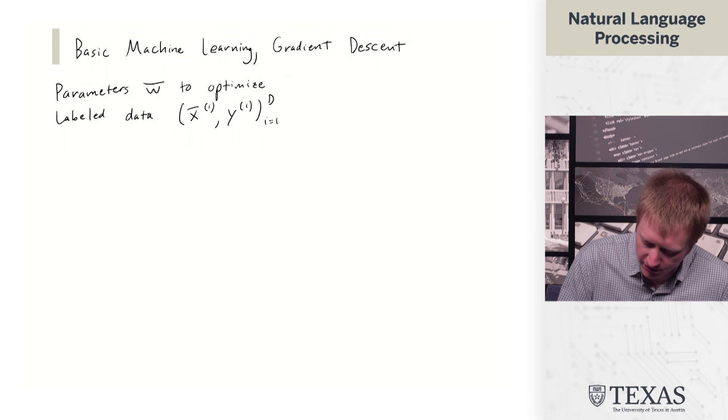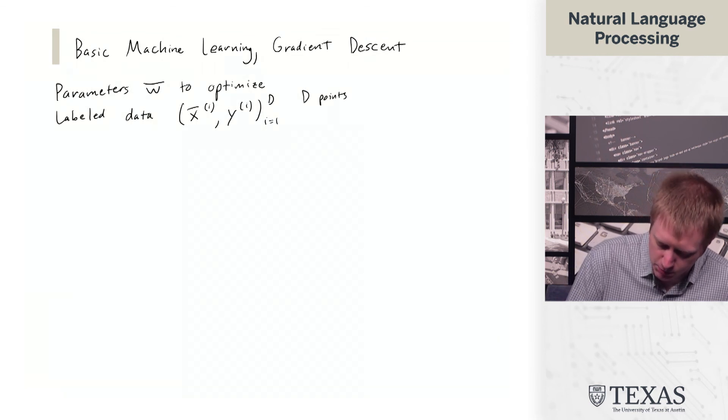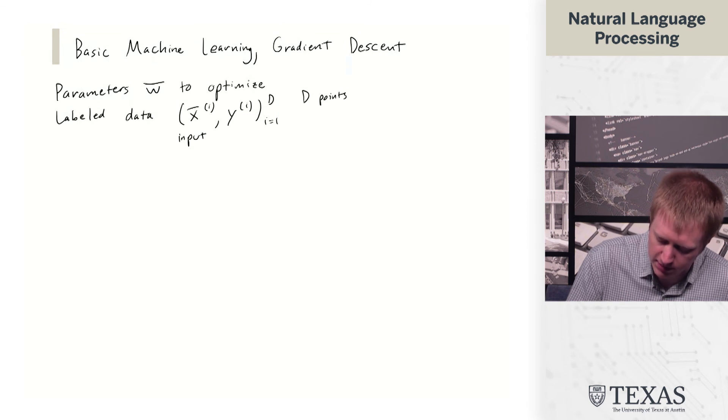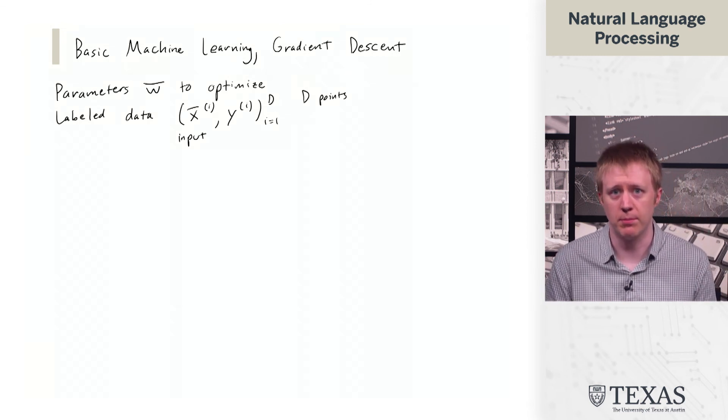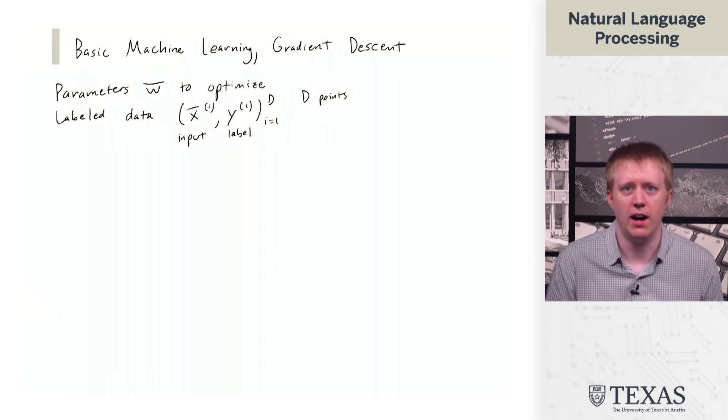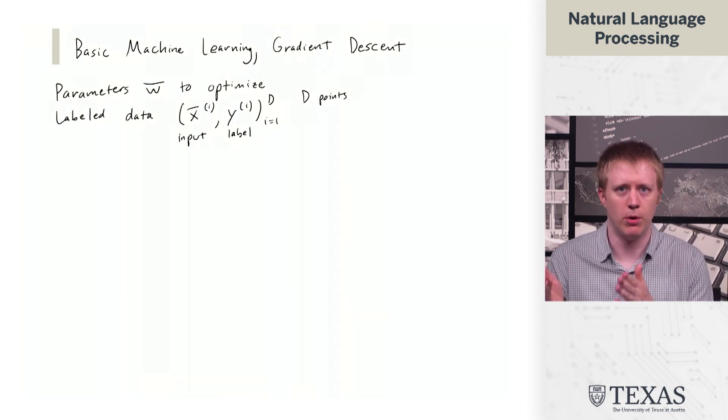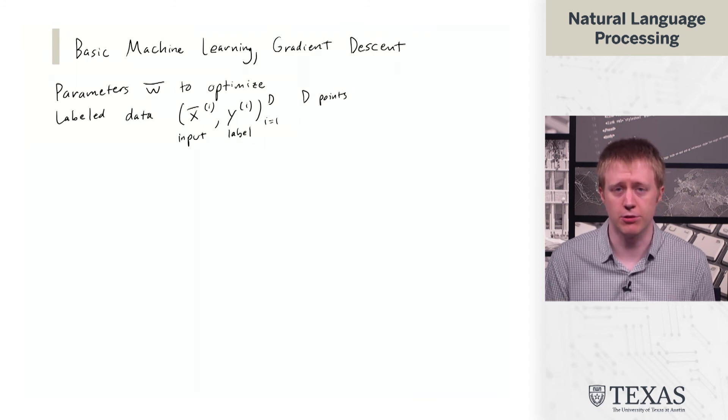So what this means is that there's d points, and each one consists of an input x, which would be something like a sentence, and a label y. And the superscript i means that that's the input or the label associated with the i-th training example.